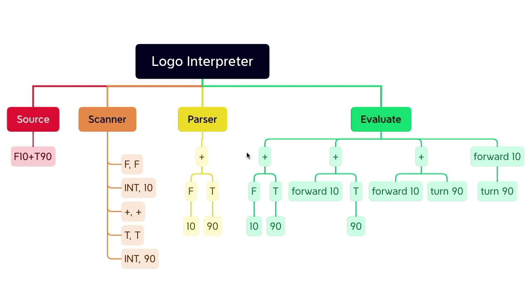Now when we evaluate this, we start with the whole subtree and evaluate the left-hand side. The left subtree evaluates to the string forward 10, and the right subtree evaluates to the string turn 90. And when we evaluate those two with a plus sign, we get forward 10 followed by turn 90, which is what we return.